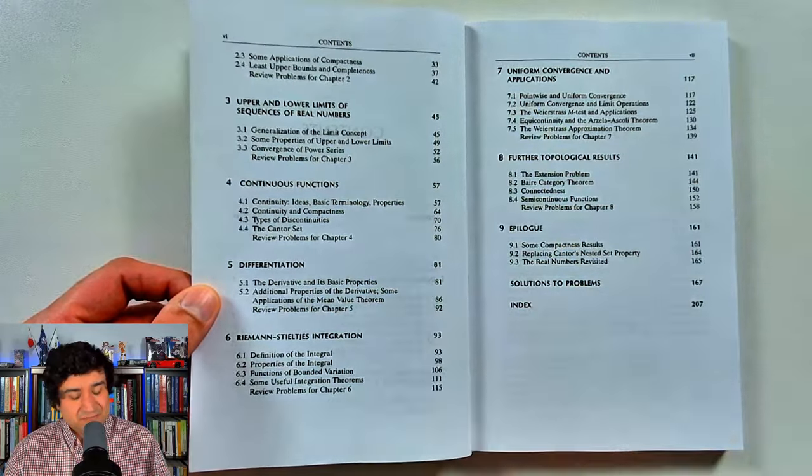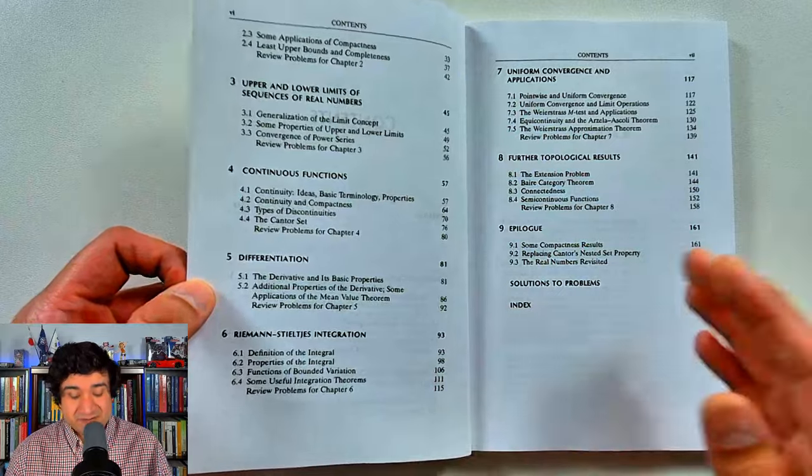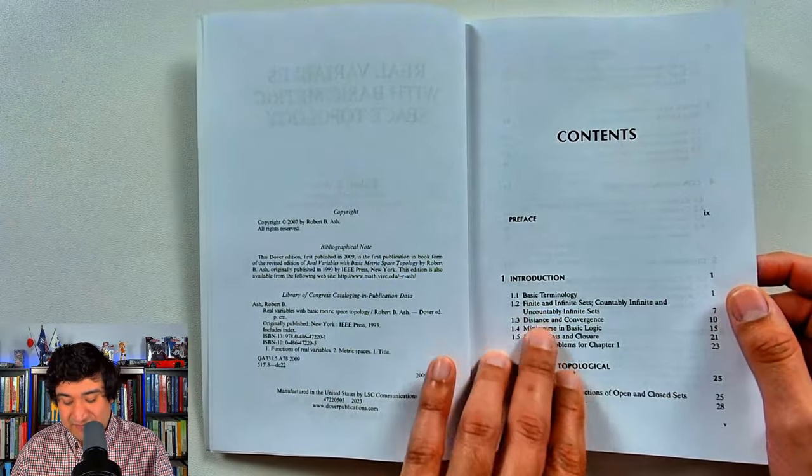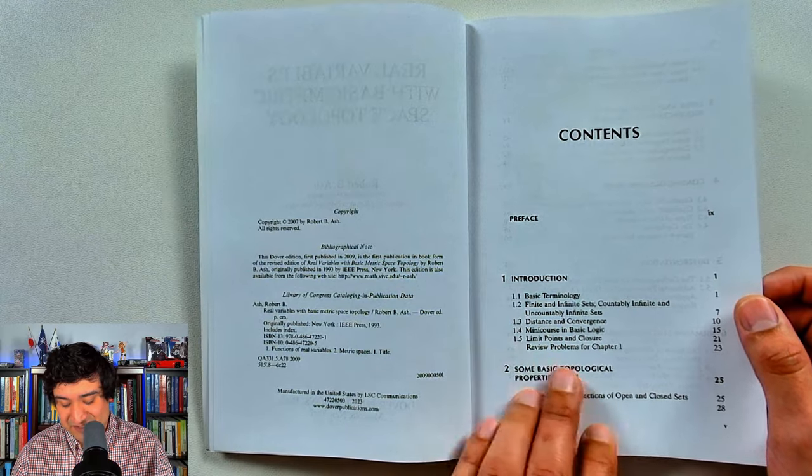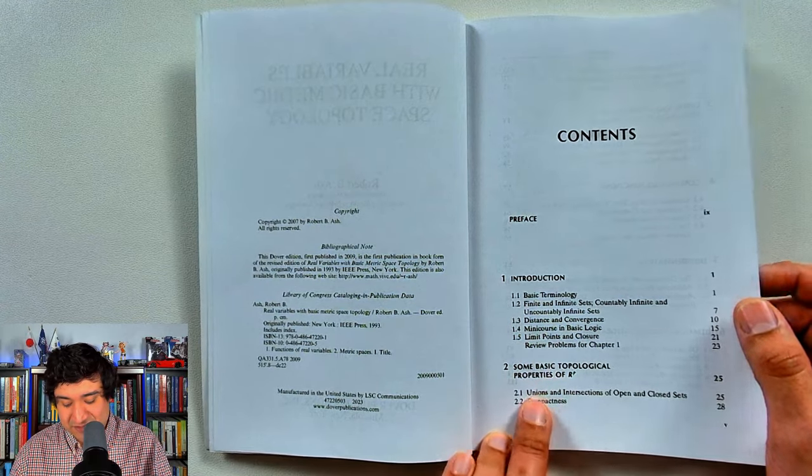So again just giving you 100% beginning to end, zero to 100% of analysis. Got basic terminology here, uncountably infinite sets, distance, metrics, convergence, got some topological properties.